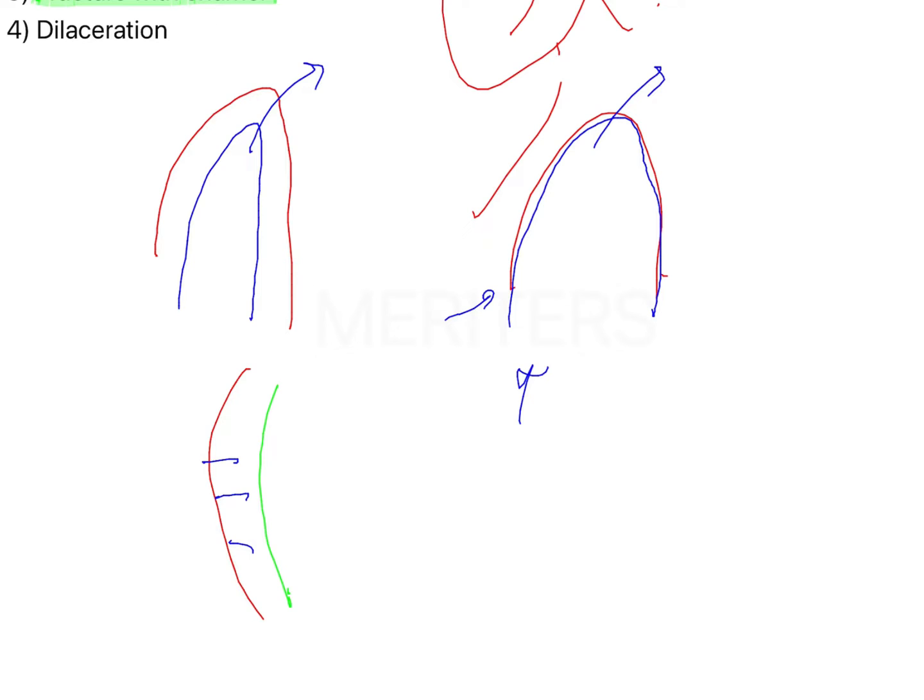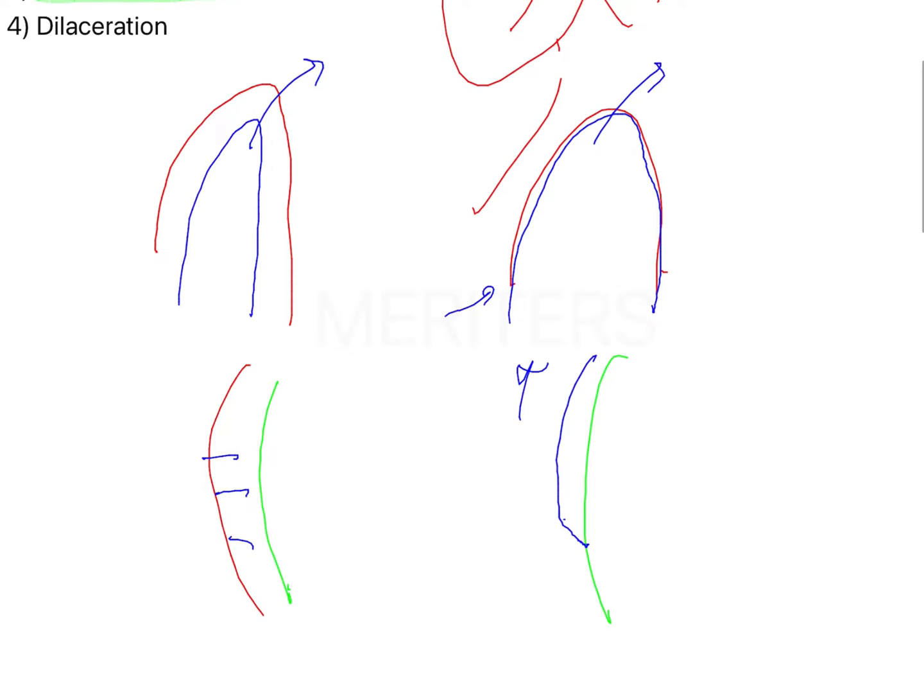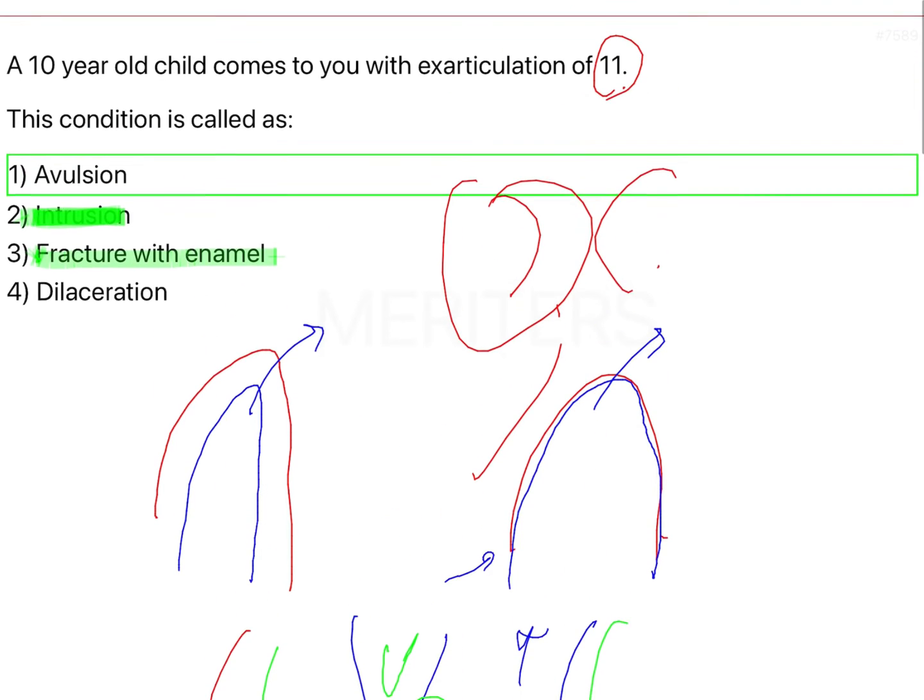Sometimes what might happen is your dentine may be present within but a part of the enamel may be chipped off. Because like we know, the incisal edge of the tooth is made up of two layers of enamel and the dentine ends here. So this area is where you have your double layer of enamel. There are instances when this part of the enamel may chip off and that is what is called again an enamel infraction.